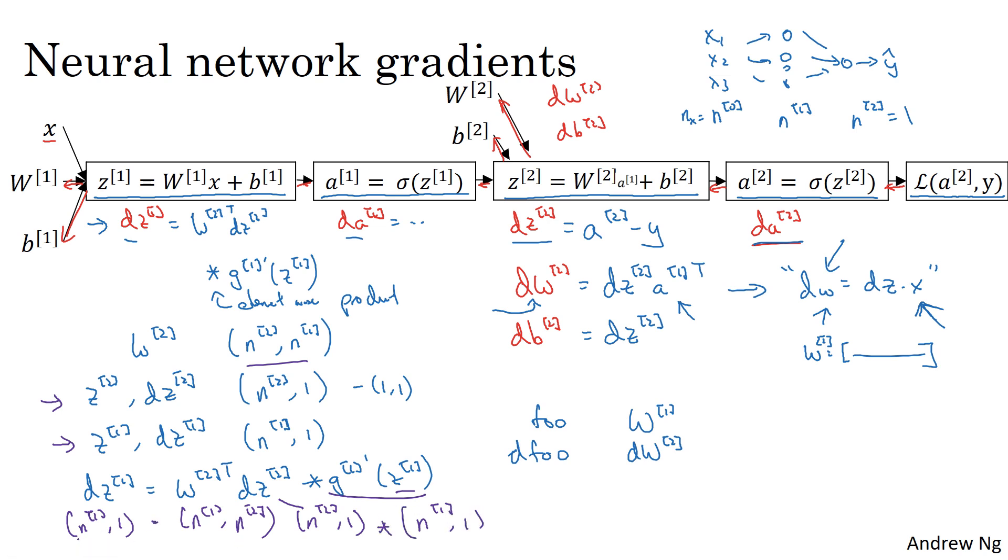So the dimensions do make sense. An n1 by one dimensional vector can be obtained by n1 by n2 dimensional matrix times n2 by n1, because the product of these two things gives you an n1 by one dimensional matrix. And so this becomes the element-wise product of two n1 by one dimensional vectors, and so the dimensions do match up.